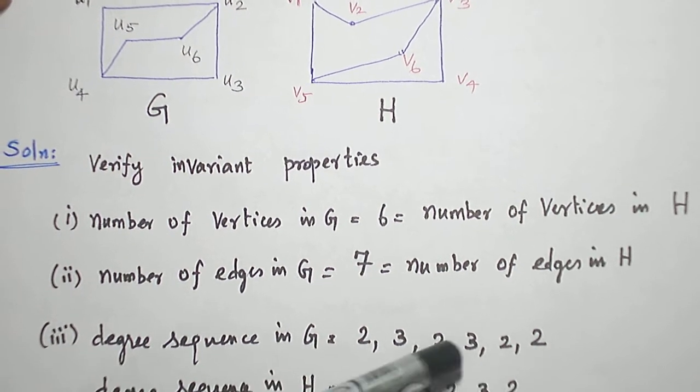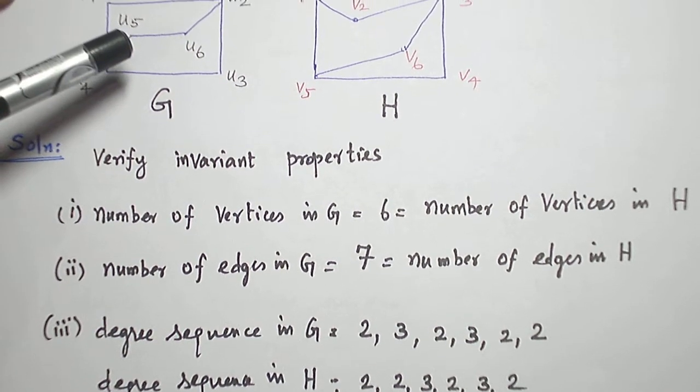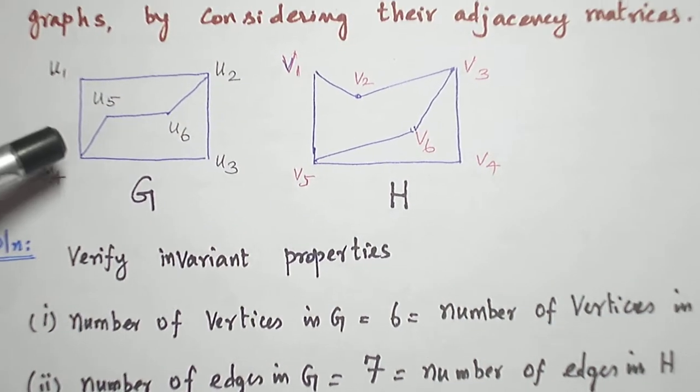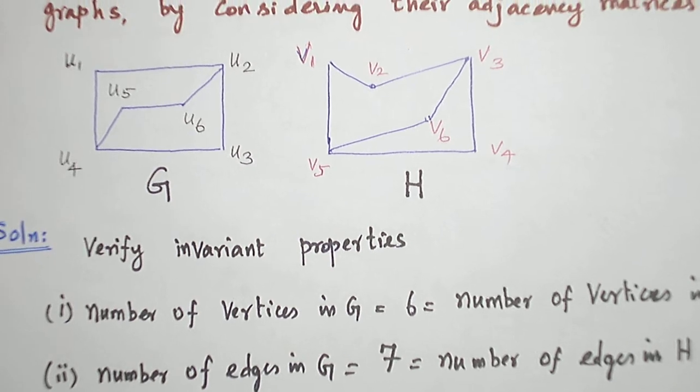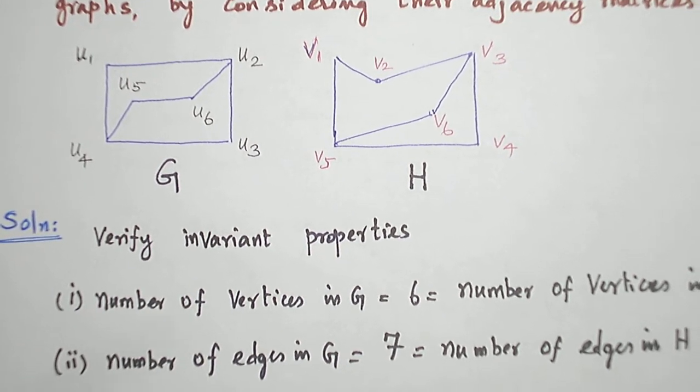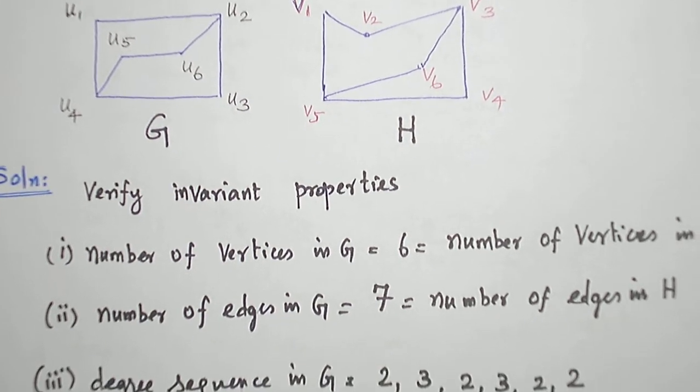There are four degree-2 vertices and two degree-3 vertices in both graphs. So, the degree sequences are also the same.